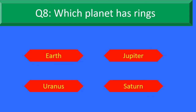Which planet has rings? Option A: Earth, Option B: Jupiter, Option C: Uranus, and Option D: Saturn. Your time starts now.